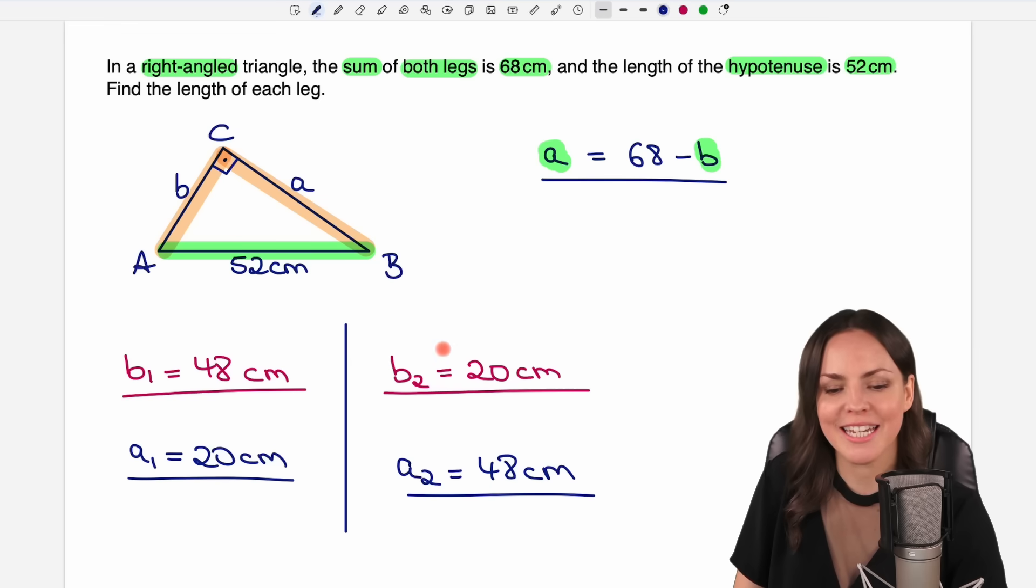So we see that we don't get two different solutions here. But either my B side is 48, and my other side is 20, or it's the other way around, that I have the short side here and the long side here. But these are or this is the only solution to this problem.